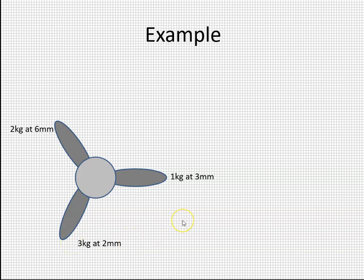So if we were to roughly work out where we think our solution is: blade one is one kilogram at three millimeters, so MR is going to be one by three, which is three. So we'll draw that vector equate to three, and it's at zero degrees. The second one is two by six is 12, going in that direction. The third one is three by two is six, going in that direction. And our solution should be somewhere like this. That's what we should expect to get.